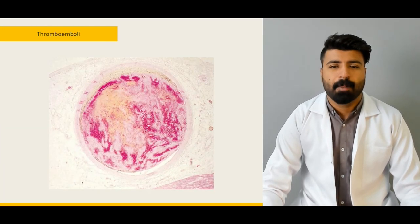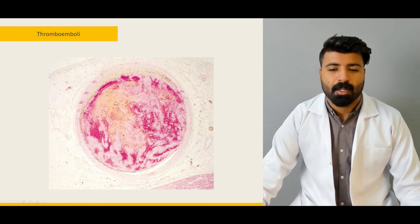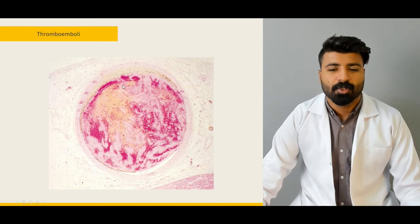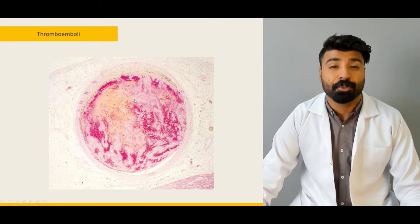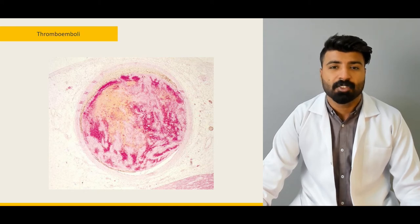This slide shows the left anterior descending artery. Notice the atherosclerotic plaque visible here - it has compromised at least 30 to 40 percent of the vessel's lumen. When 30 to 40 percent of the lumen is occupied by atherosclerotic plaque, the heart won't receive enough blood or oxygen, and we all know the result: ischemic heart disease.